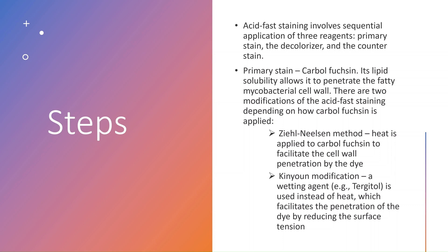The second is the Kinyoun modification. Here we use a chemical wetting agent that reduces surface tension to facilitate the entry of carbolfuchsin into the bacterial cell. The wetting agent commonly used is Tergitol, which reduces surface tension and facilitates penetration of the dye into the bacterial cell.